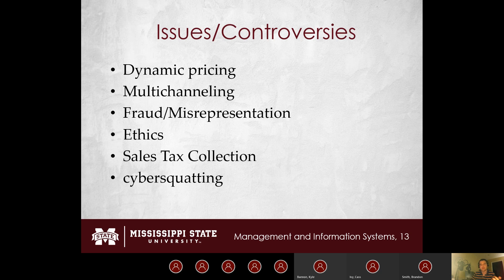Dynamic pricing is also common in airline tickets — the more you search for something, the higher your price may be because it signals you really want the ticket. A way around that is to use incognito or private browsing mode on your web browser, so tracking cookies aren't saved and your search history isn't retained.